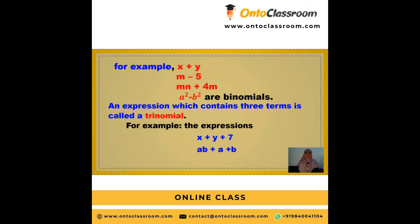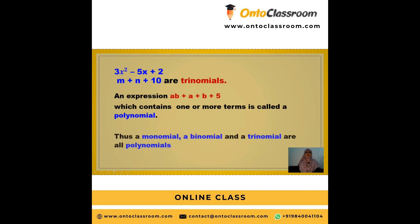An expression which contains three terms is called a trinomial. Examples include x + y + 7, ab + a + b, and 3x² - 5x + 2, and m + n + 10. An expression which contains one or more terms is called a polynomial. For example, ab + a + b + 5 has more than three terms, making it a polynomial. Thus, monomials, binomials, and trinomials are all polynomials.